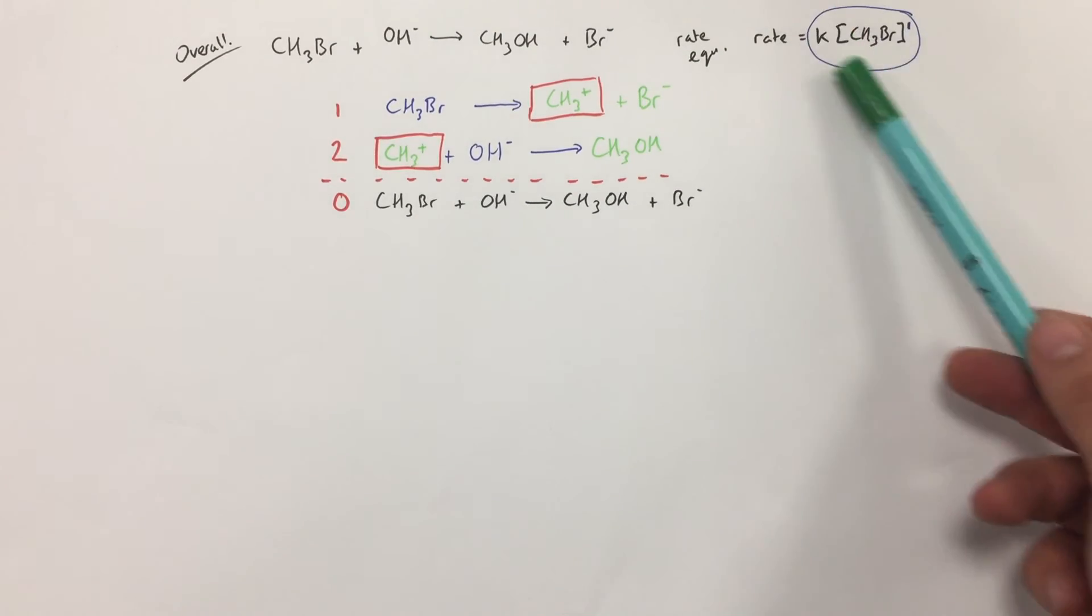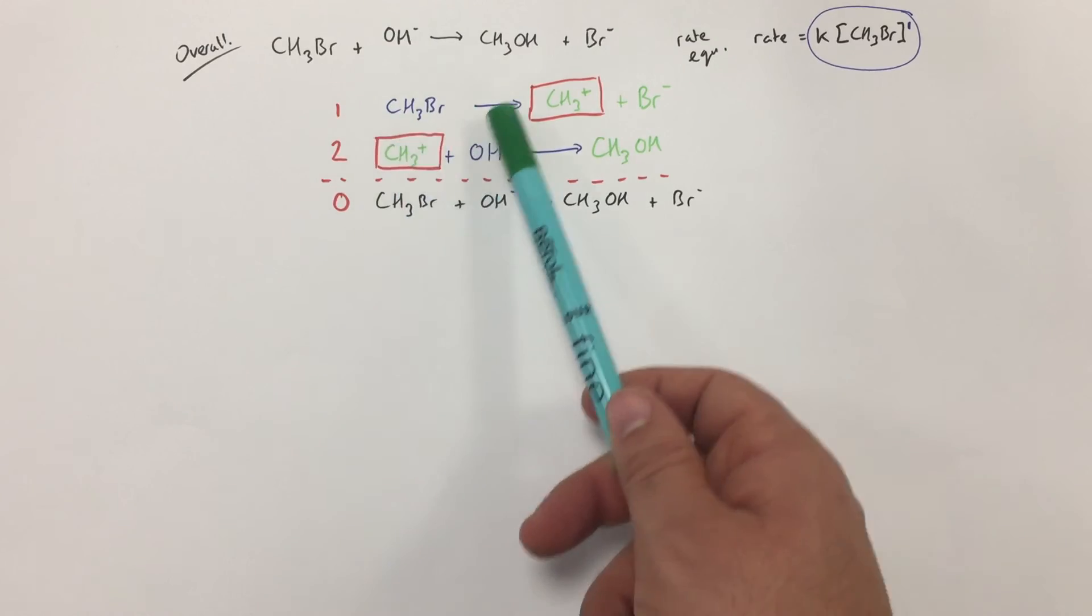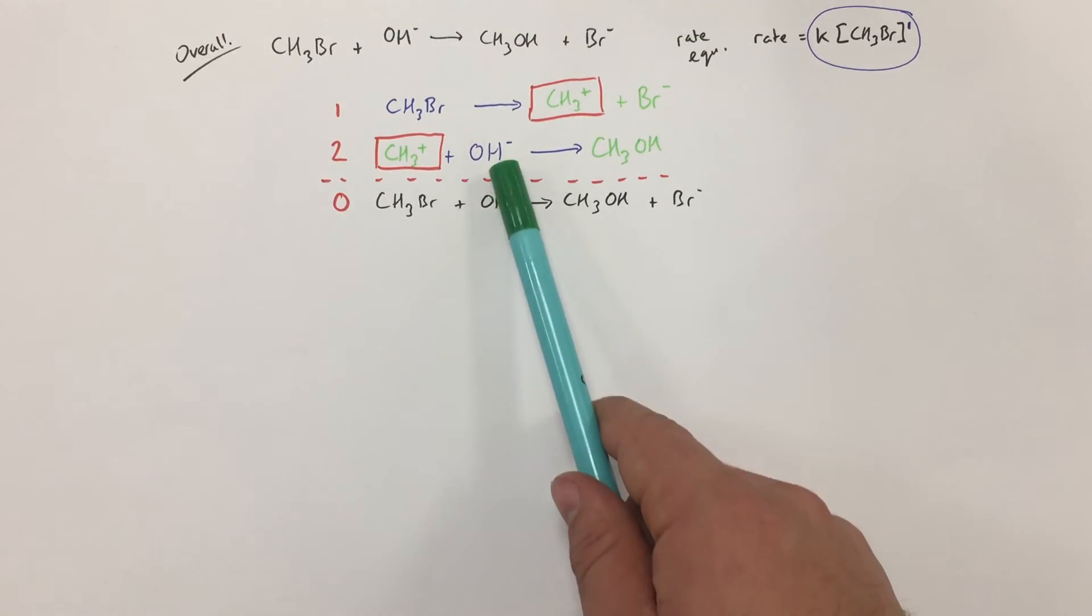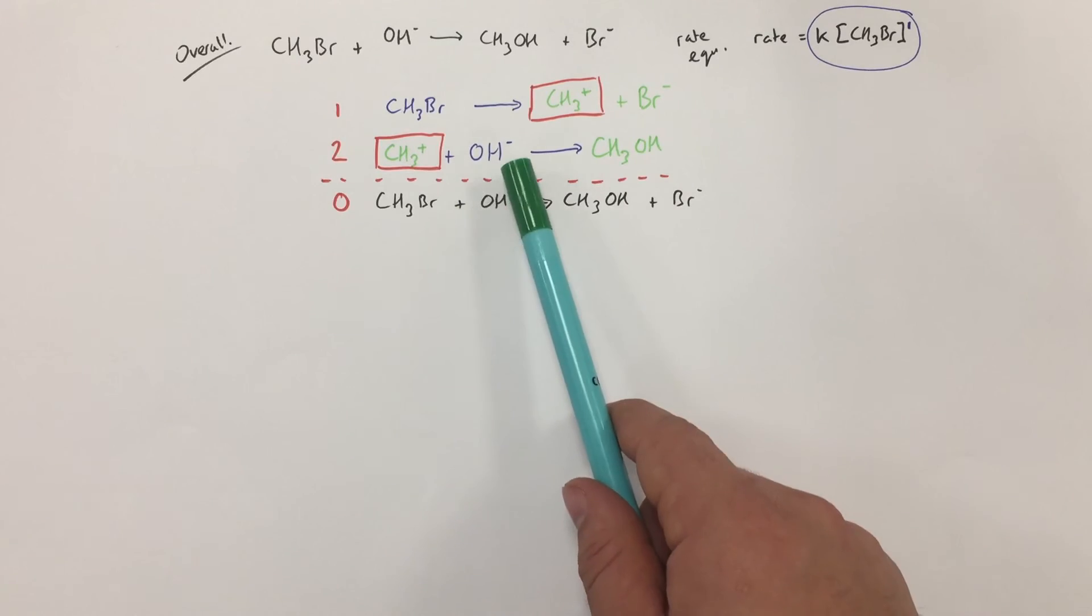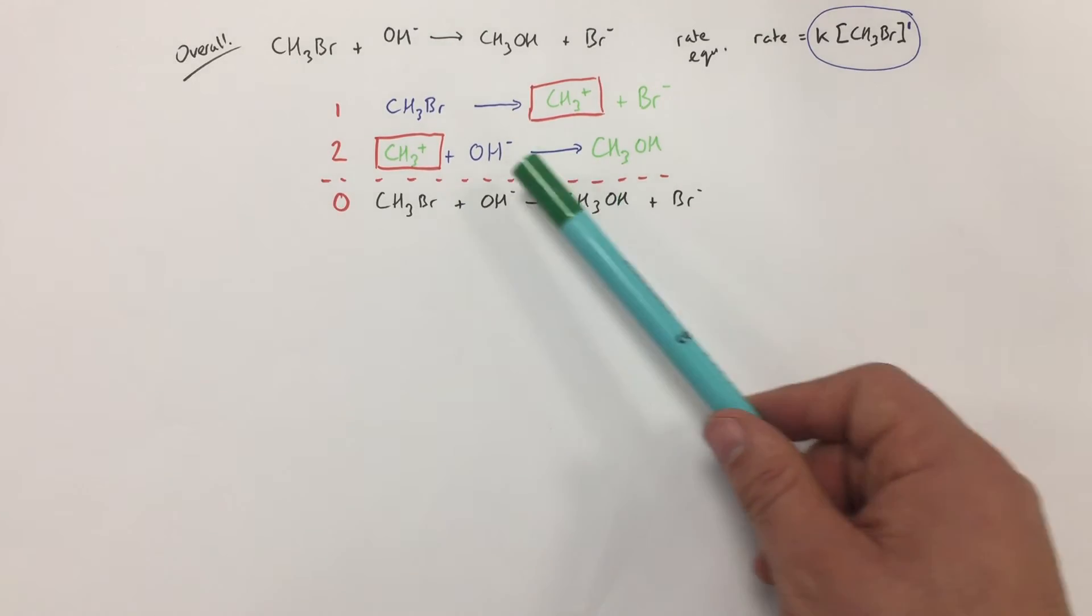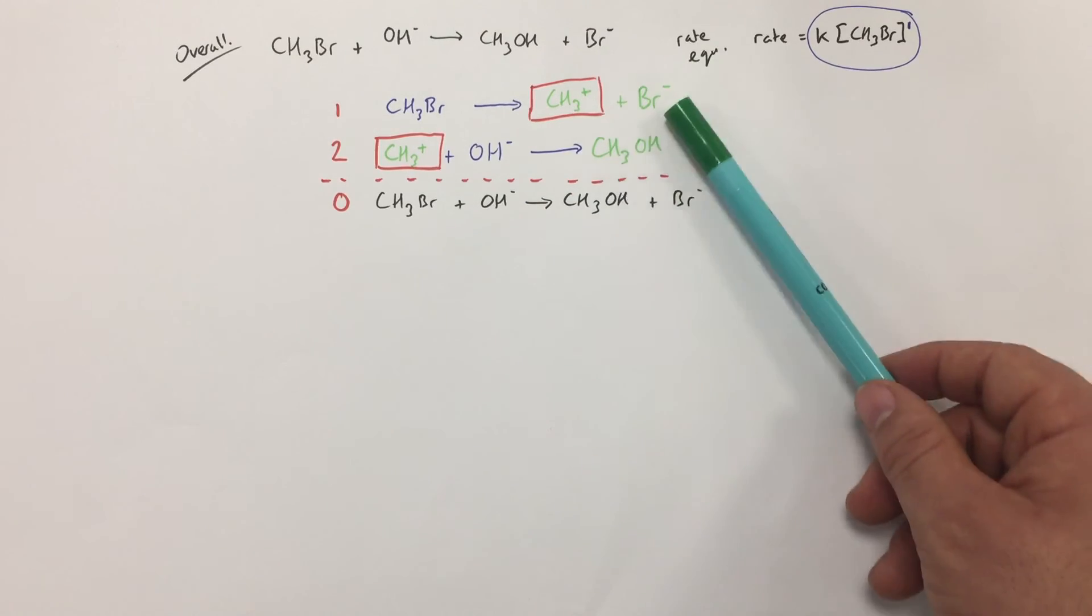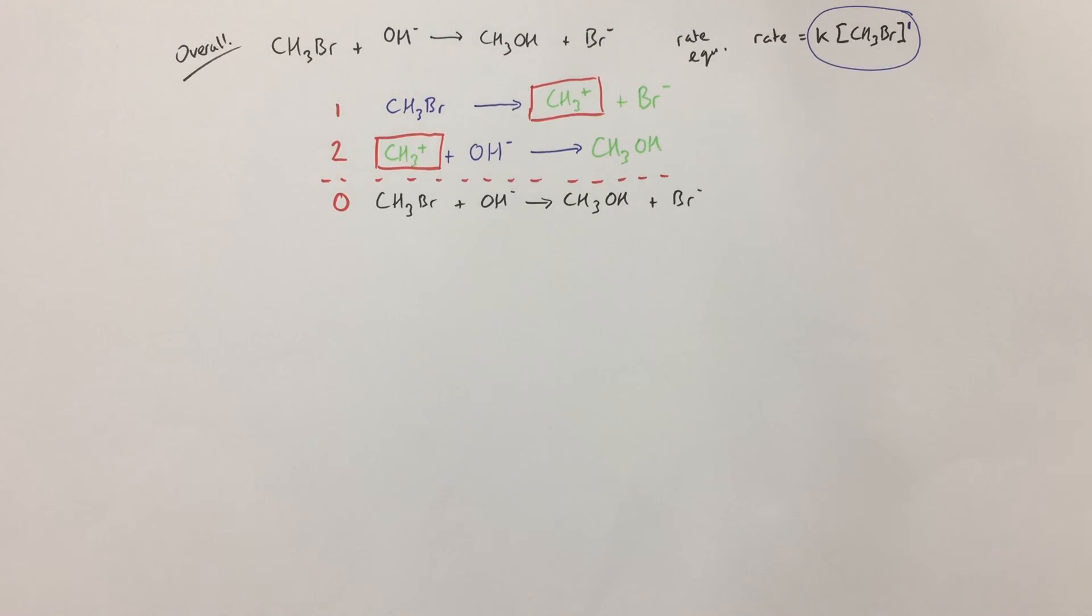Remember that the rate equation gives you your rate determining step, which is the left-hand side of your first step. Then add any additional reactants in the second step that you haven't used already, and then work out what is a sensible intermediate and when your products are likely to be formed. That is how you do mechanisms using rate data.